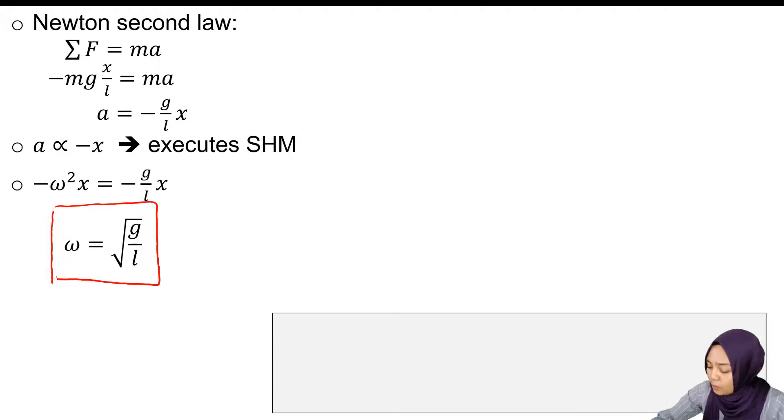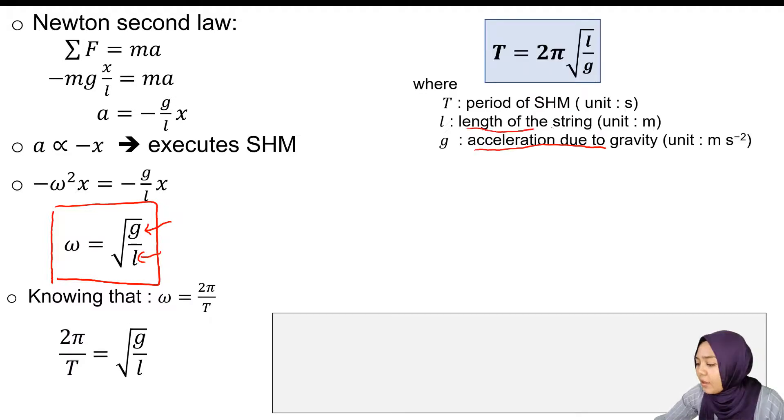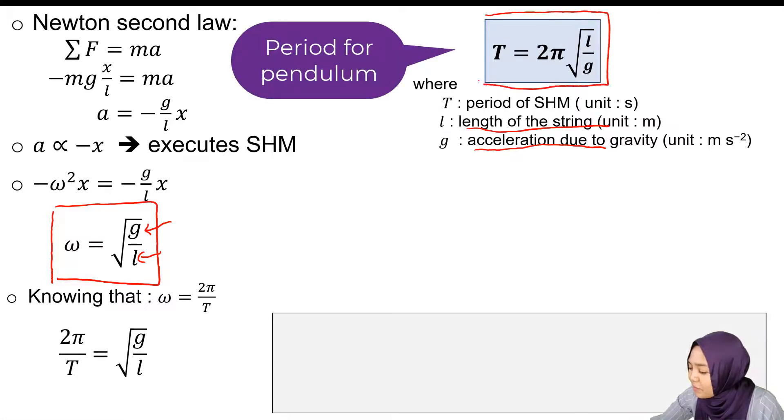Where g is the gravitational acceleration and l is the length of the string. When we rearrange, we get the period for pendulum T = 2π√(l/g).